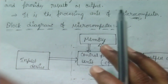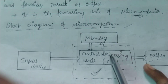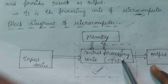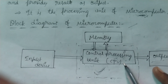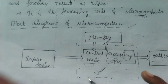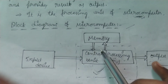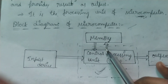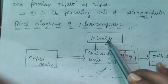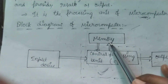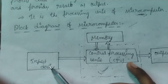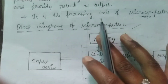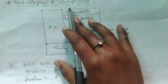In this microcomputer block diagram, the first part is the central processing unit, which is the main part and is the microprocessor — that's why it is kept in dotted lines. Memory is used to store binary data. Input devices are used to provide input to the microcomputer.